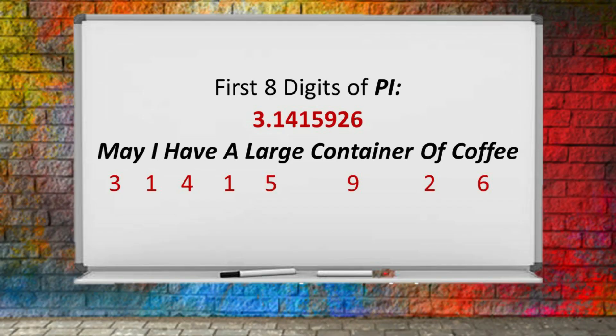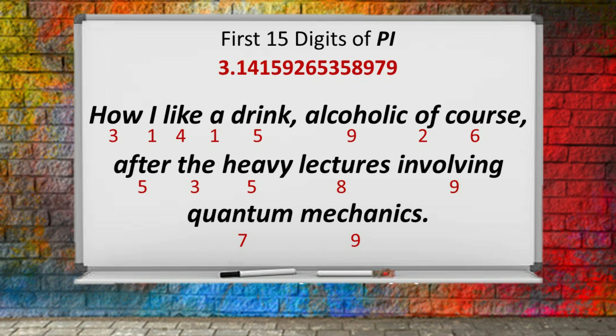Now let's do pi to eight places — this is an easy one: "May I have a large container of coffee" — 3, 1, 4, 1, 5, 9, 2, 6. Now let's get a little more ambitious. This longer one is kind of popular with some students: "How I like a drink, alcoholic of course, after the heavy lectures involving quantum mechanics."